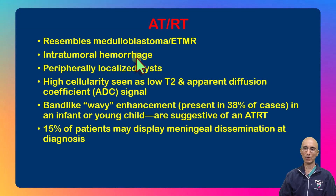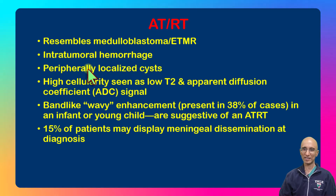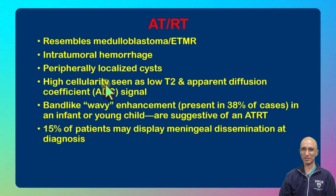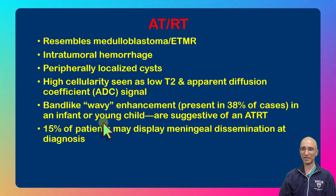Age plays a critical role in diagnosing or at least suggesting this diagnosis on imaging. As we saw in our patient, there can be internal tumoral hemorrhage and peripheral localized cysts. This lesion demonstrates low ADC and low T2 signal, consistent with high cellular vascularity. The lesion also demonstrates internal patchy enhancement, as we saw in our patient. Notably, 15% of these patients can demonstrate meningeal metastasis at the time of diagnosis.